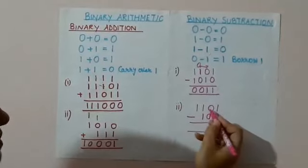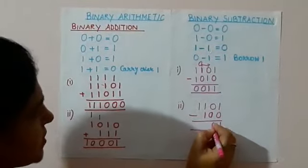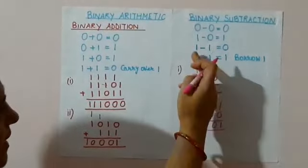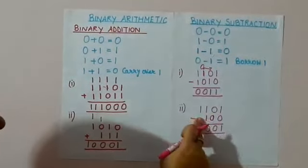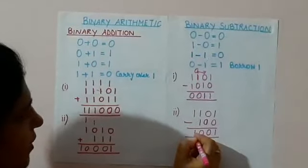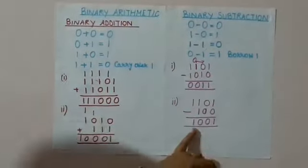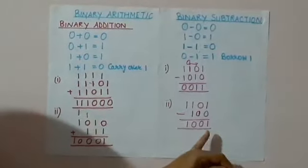Now, next is 0 minus 0, which means 0. Then, 1 minus 1 is 0. And here, no number is there, so we will simply write 1. The answer is 1001.